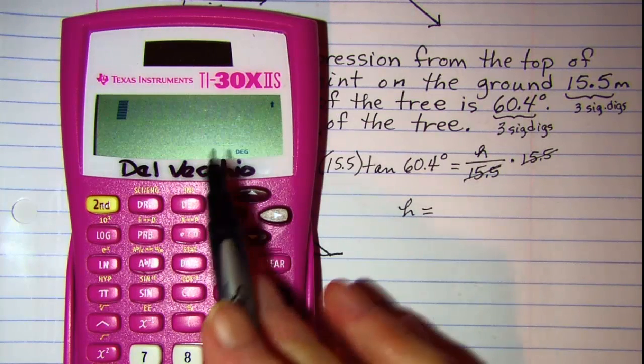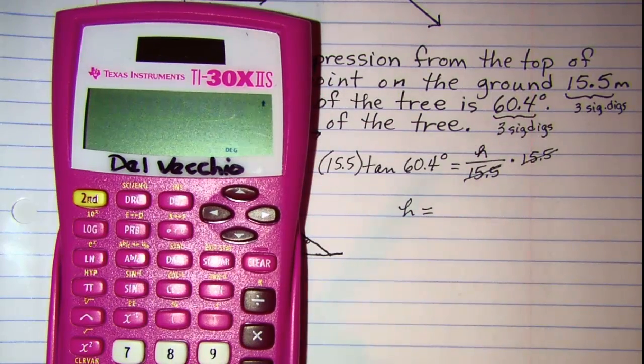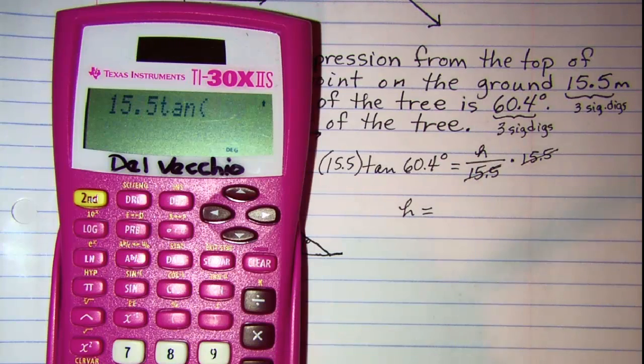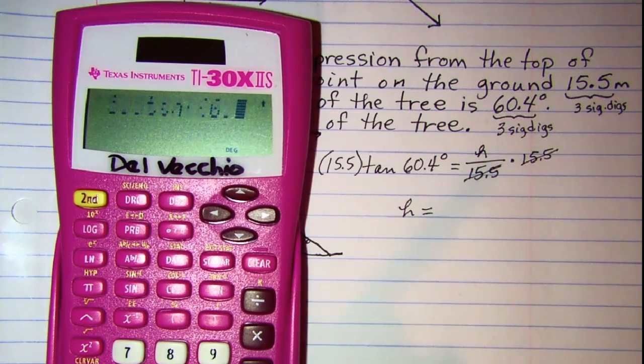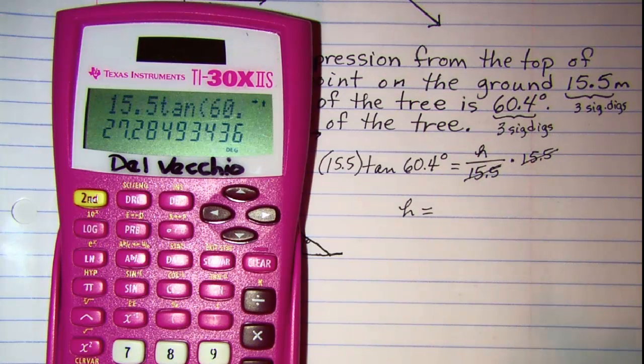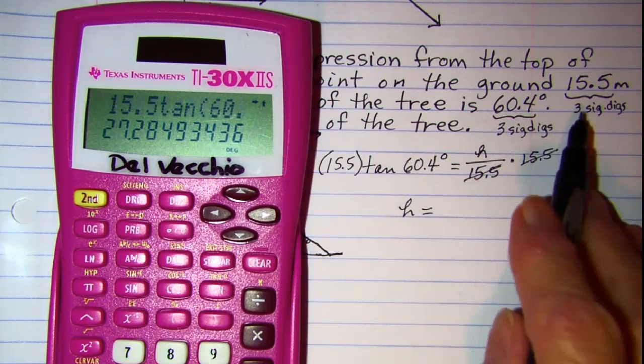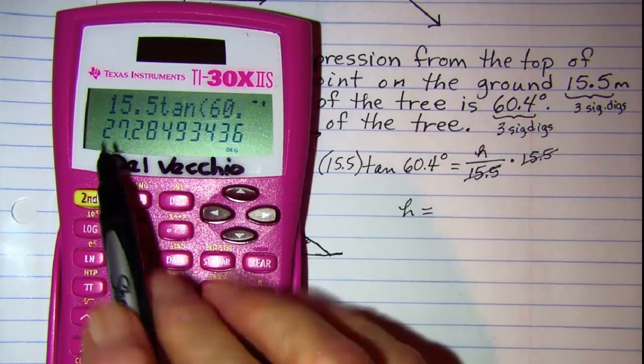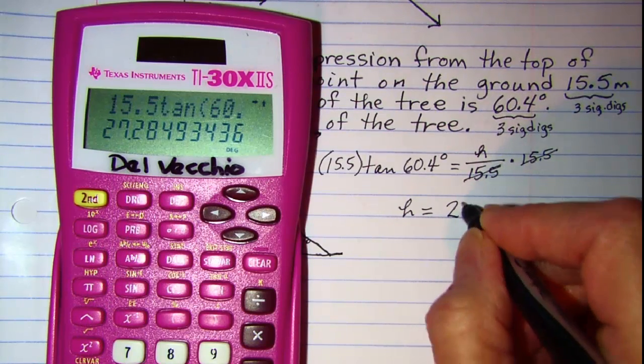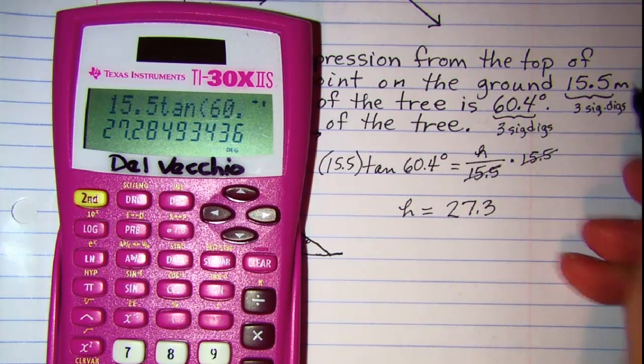Make sure we're in degrees and our product is 15.5 times the tangent of 60.4. Close my argument and hit equal. So H is, and we need three significant digits. So we'll go with 27.8 meters.